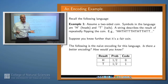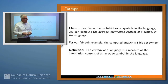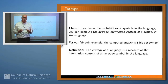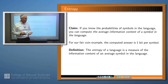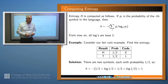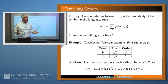The question we want to ask is: could we do any better than that? Here's a claim I'd like to make. If you know the probabilities of symbols in a language, you can figure out what the best possible encoding is, or at least a measure of the best possible encoding. So for our fair coin example, we can actually compute that the best possible encoding for this language uses on average one bit per symbol, and our naive encoding uses one bit per symbol. So in a sense, our naive encoding is the optimal encoding for this language. The notion we want to introduce here is called entropy, and entropy is defined as a measure of the information content of an average symbol in the language.